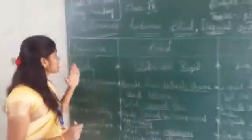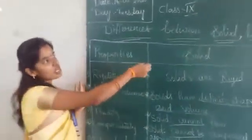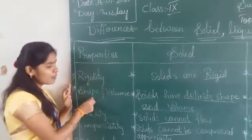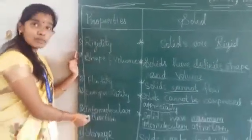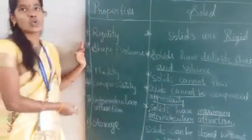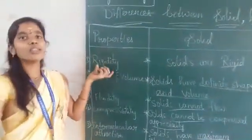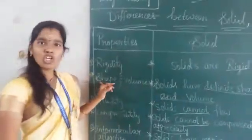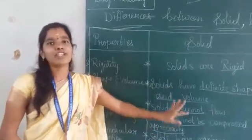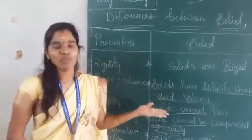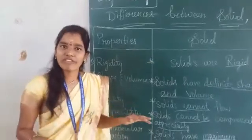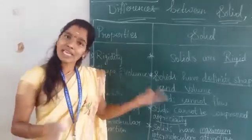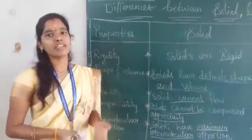Today we discussed six properties showing the differences between solids, liquids and gases. For rigidity: solids are rigid, liquids and gases are not. For shape and volume: solids have both definite shape and volume; liquids have only definite volume and take the shape of the container; gases have neither definite shape nor definite volume.